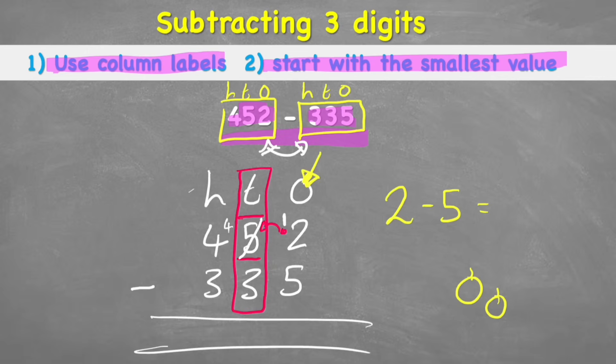There was a 50 in this little box here. I've turned it down to a 40, just here, and I've taken a 10 and given it to my 2. So that means I now have 12 apples.